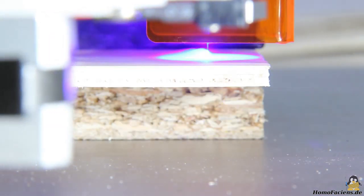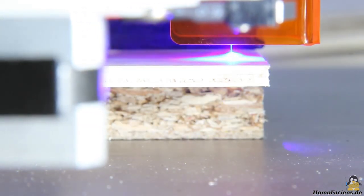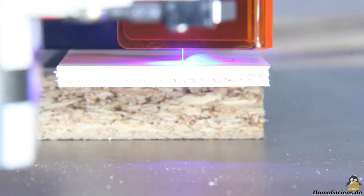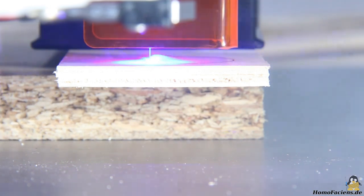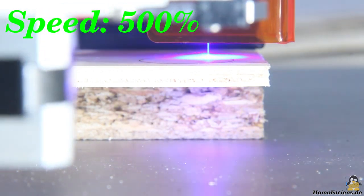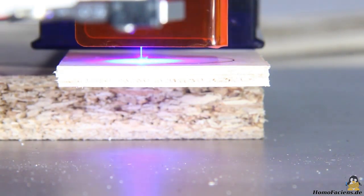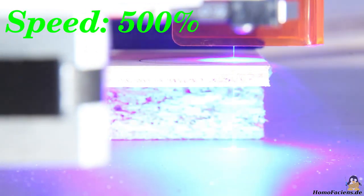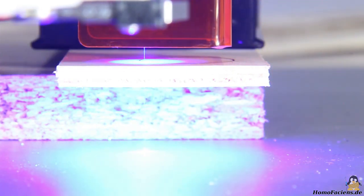The same material is now processed with the same settings using the long focus module. Here too you can see how the smoke is blown away from the laser beam by the fan. The disc falls down again after 4 passes.